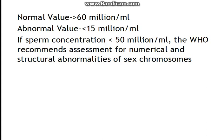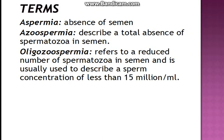In cases of infertility, if the sperm concentration is less than 50 million per ml, there are chances that the sperms can also be abnormal in morphology. We can then recommend the assessment of numerical or structural abnormalities, and also look for them in the chromosomes.